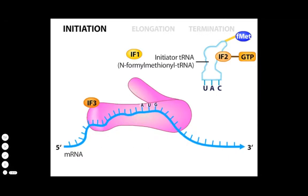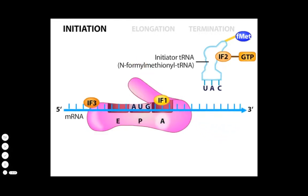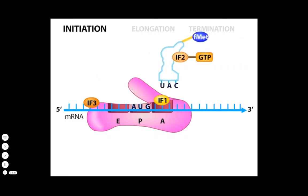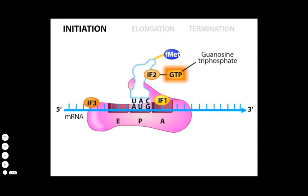IF1 binds to the small subunit at a location called the A site, where incoming tRNAs normally bind. The first tRNA called N-formylmethionyl tRNA thus enters another site called the P site. The initiator tRNA has been escorted to the P site by IF2, which is bound to GTP, a high energy molecule similar to ATP. The anticodon of the tRNA is complementary to the AUG start codon.